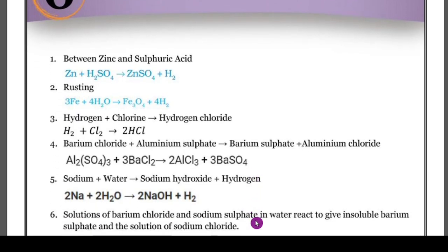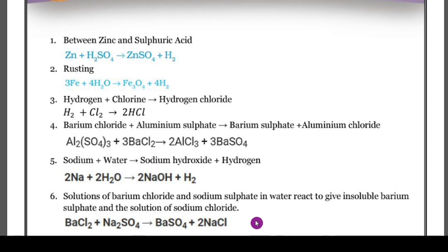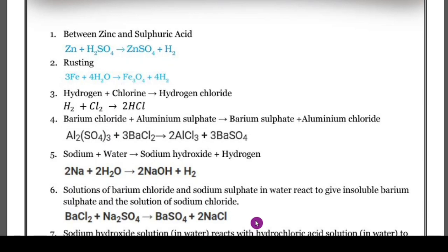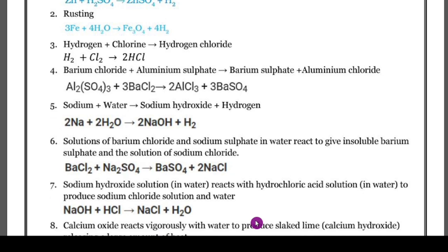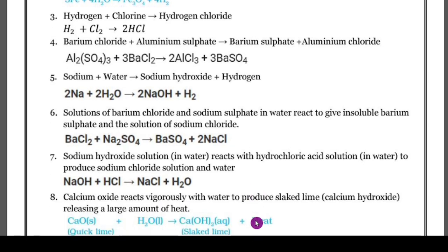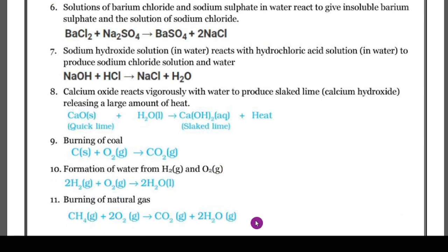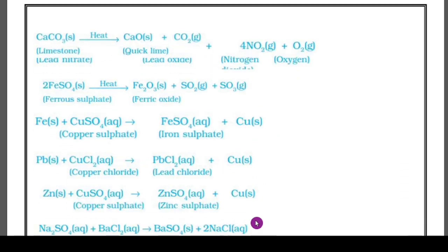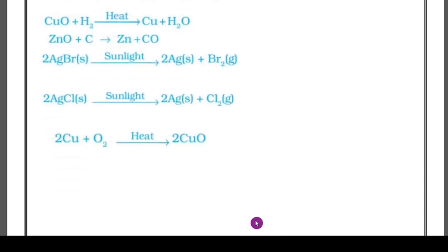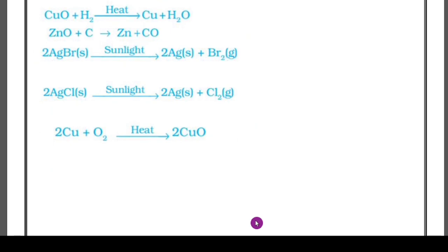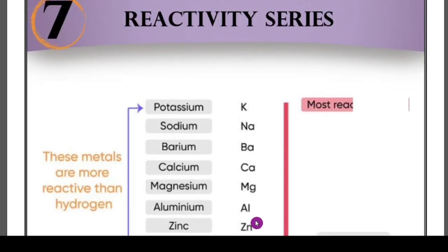The next concept is balanced chemical equations — 100 percent this question will be in your final examination. From both the acid and base chapter and the chemical reactions chapter, we have plenty of equations to practice. A balanced chemical equation means products and reactants must be equal. I have given almost all the equations from both chapters, plus some extra ones. Copy these and practice thoroughly.